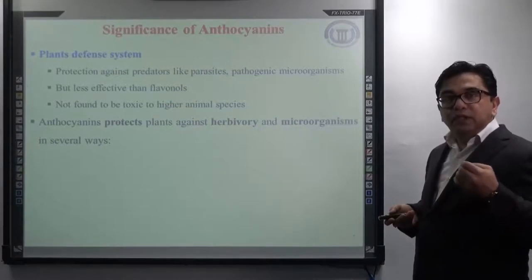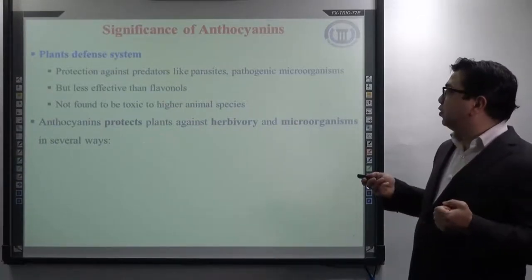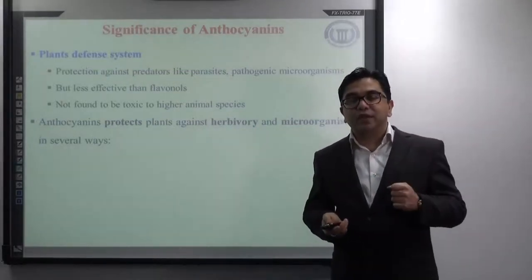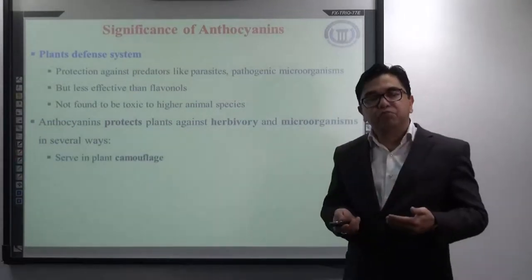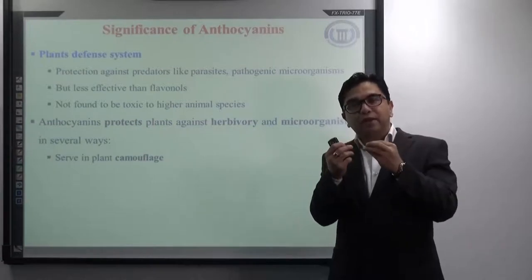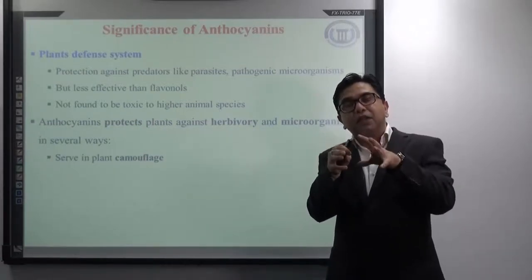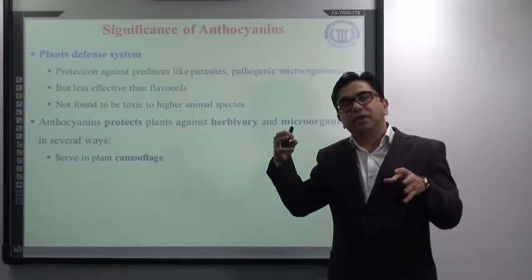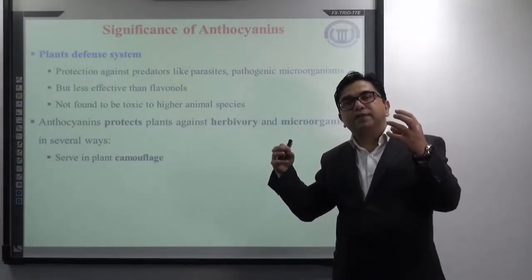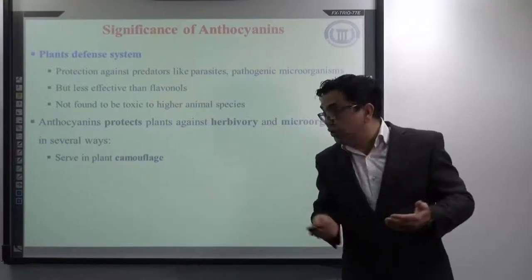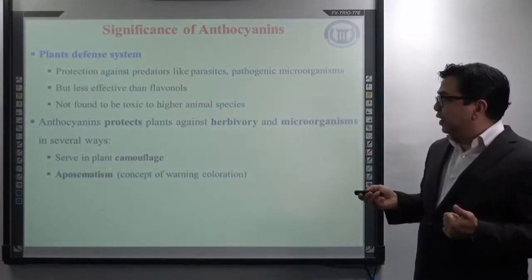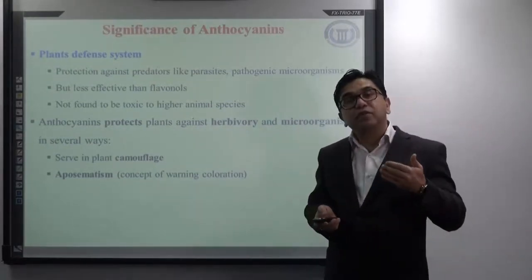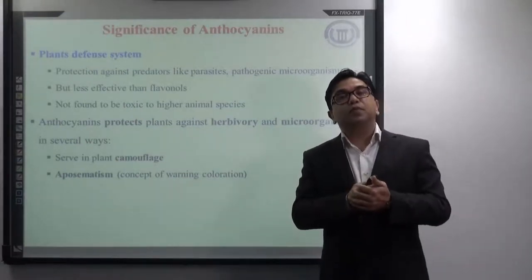Anthocyanins protect plants against herbivory and microorganisms in various ways. Two interesting ways are: first, they serve in plant camouflage, where they help provide certain types of color which help the plant hide itself within the natural surrounding color so that predators cannot recognize the plant as their prey. Another interesting concept, which is opposite to camouflage, is aposematism — a concept of warning color.